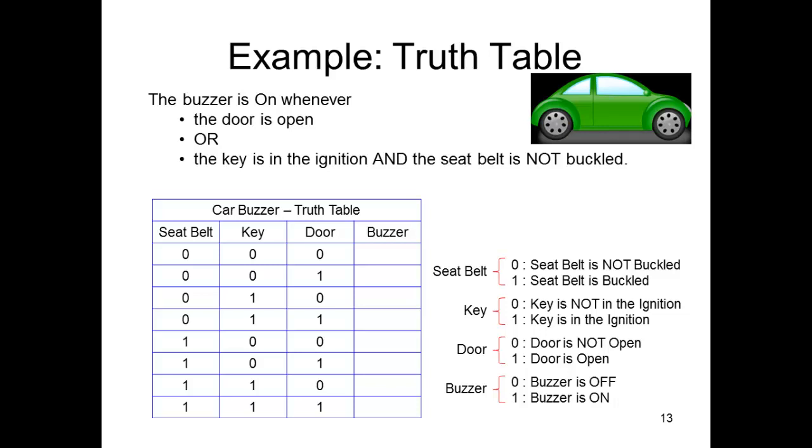I did my inputs and labeled them seat belt, key, and door. Zero zero zero is the first line—that's zero, then one, then two, then three, then four, then five, then six, then seven. We always start with zero and end with ones all the way across. Whenever the door is open, we need to go through and put a one everywhere that the door is open.